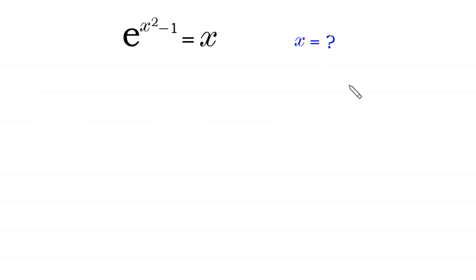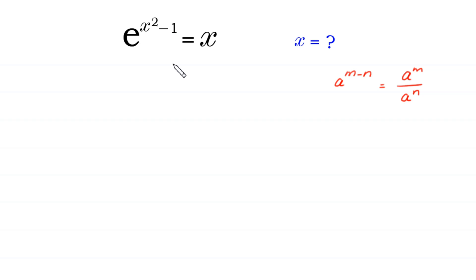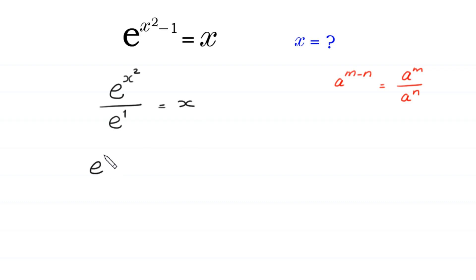According to this property of exponents, a to the power m minus n is equal to a to the power m divided by a to the power n. We can write e to the power x squared minus 1 as e to the power x squared divided by e to the power 1, which is equal to x.